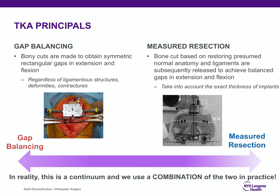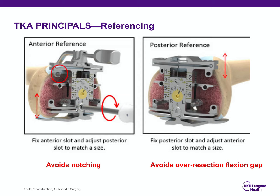Anterior referencing systems size your femur based on the anterior cortex, with the anterior cut fixed and the posterior cut changing. This avoids notching but can lead to variable flexion spaces. Posterior referencing uses a fixed amount on the posterior condyles every time and adjusts the anterior cut — this avoids over-resection of the flexion gap but can lead to significant anterior notching if not careful.